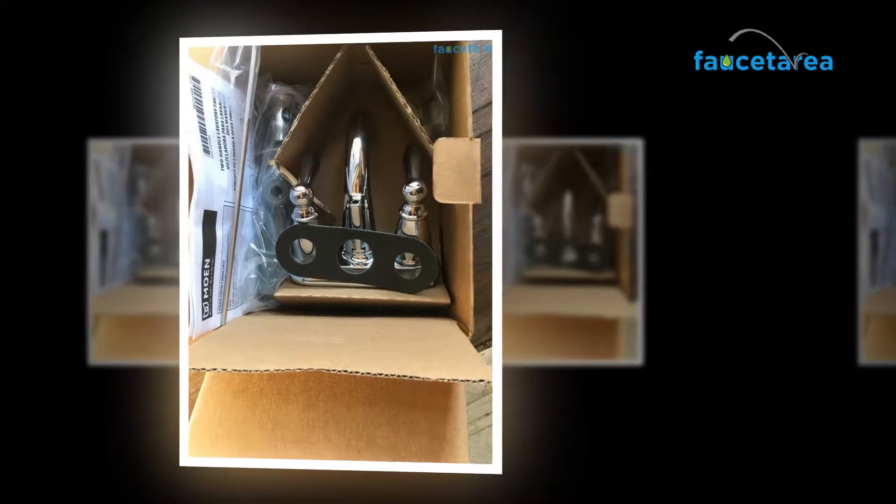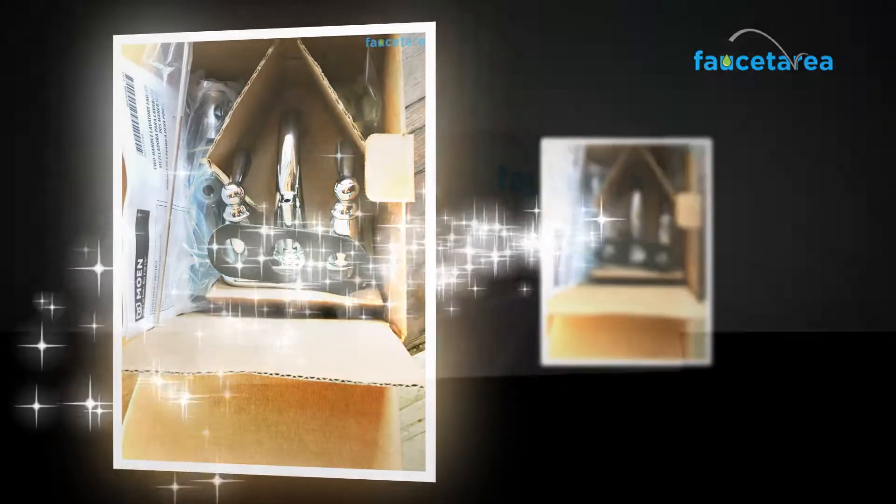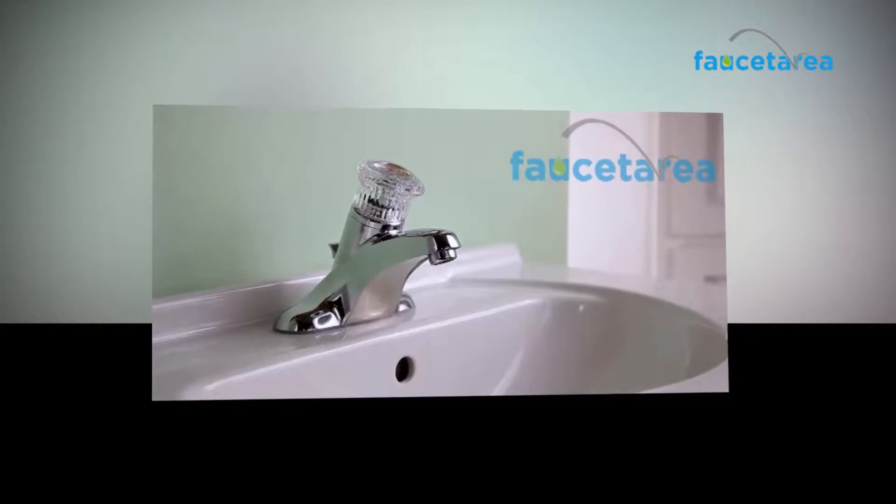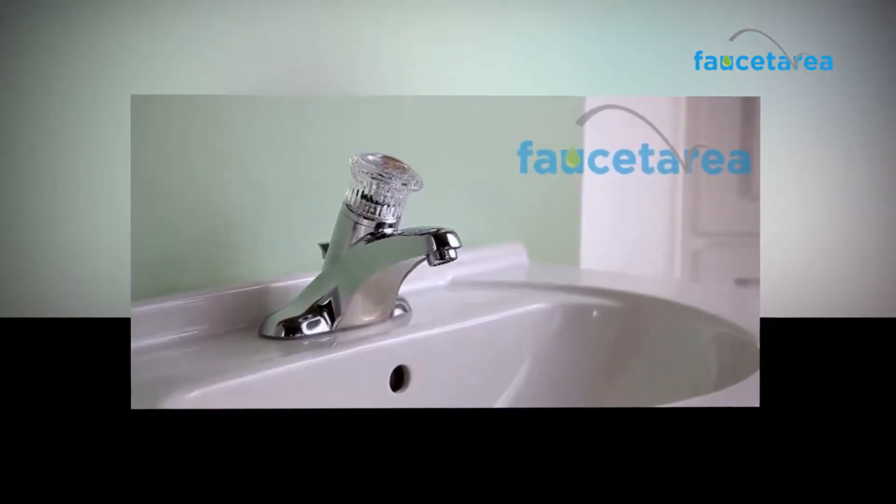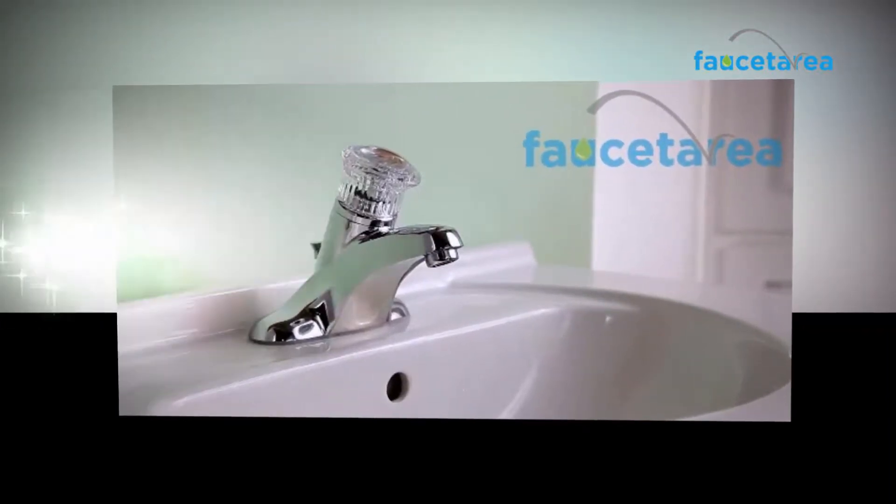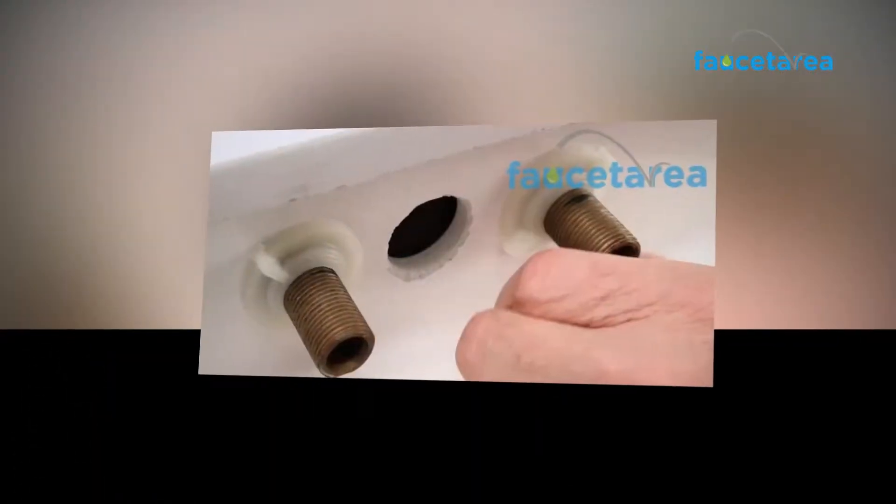Moen 6172 Glide is a two-handle high arc centerset bathroom faucet in chrome. It is one of the best faucets for bathrooms. It is a transitionally styled faucet which enhances the beauty of your bathroom.